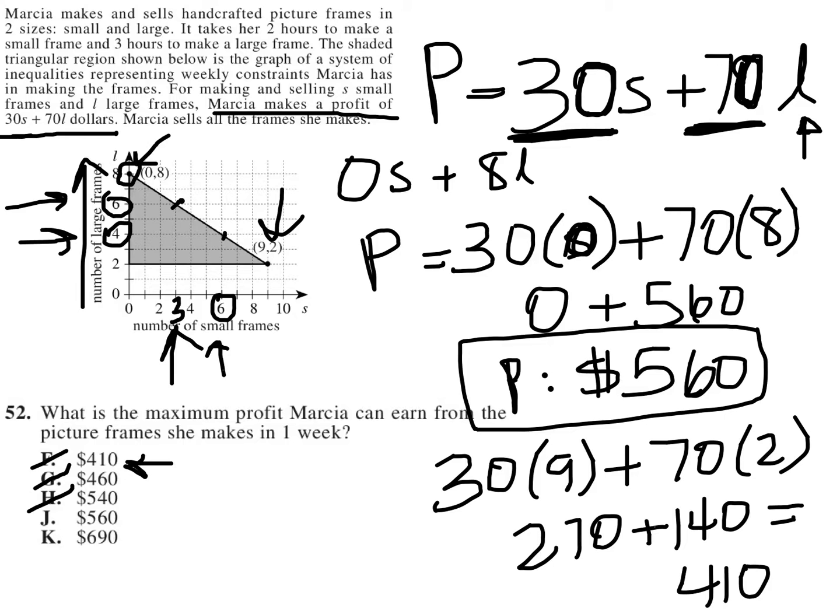So our answer here for maximizing the profit is J, $560. And again, this is really based upon the fact that she never makes more than 8 large frames. And because she's making so much more for the large frame than she is for the small frame, that's going to carry this answer and make it answer choice J.